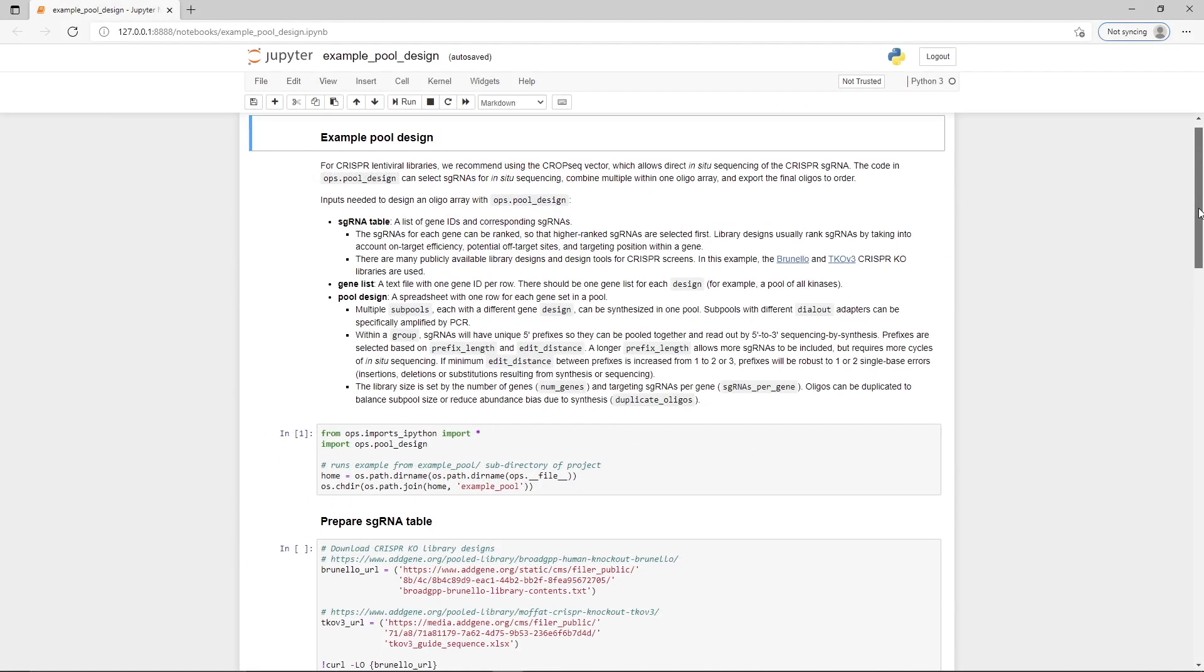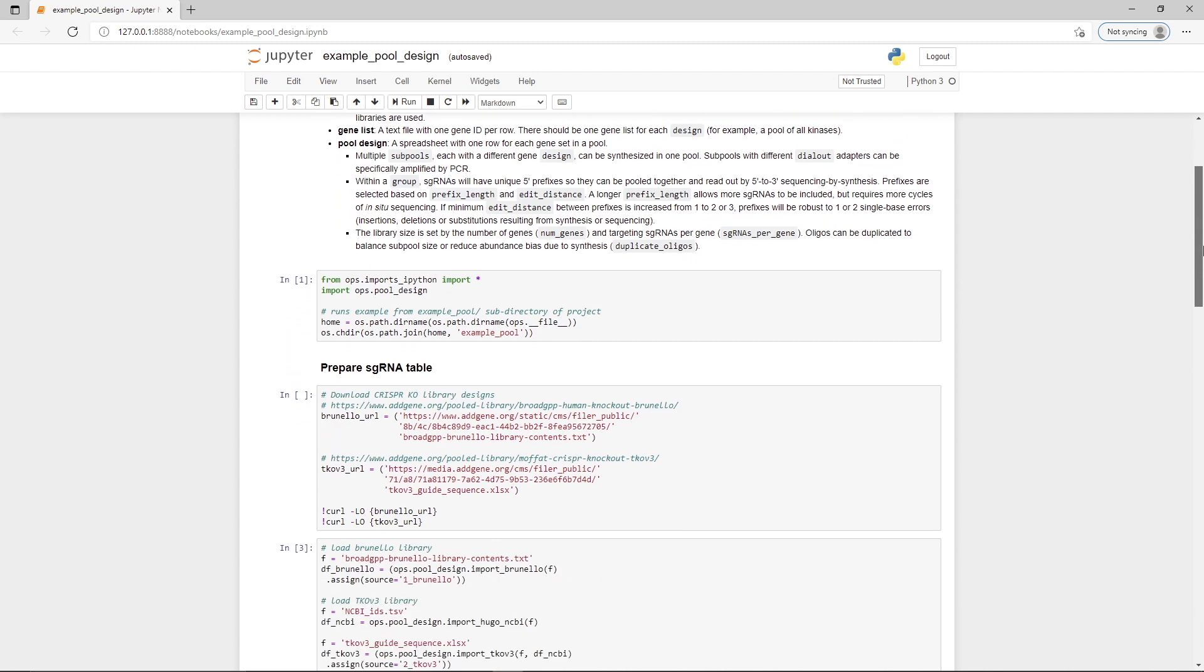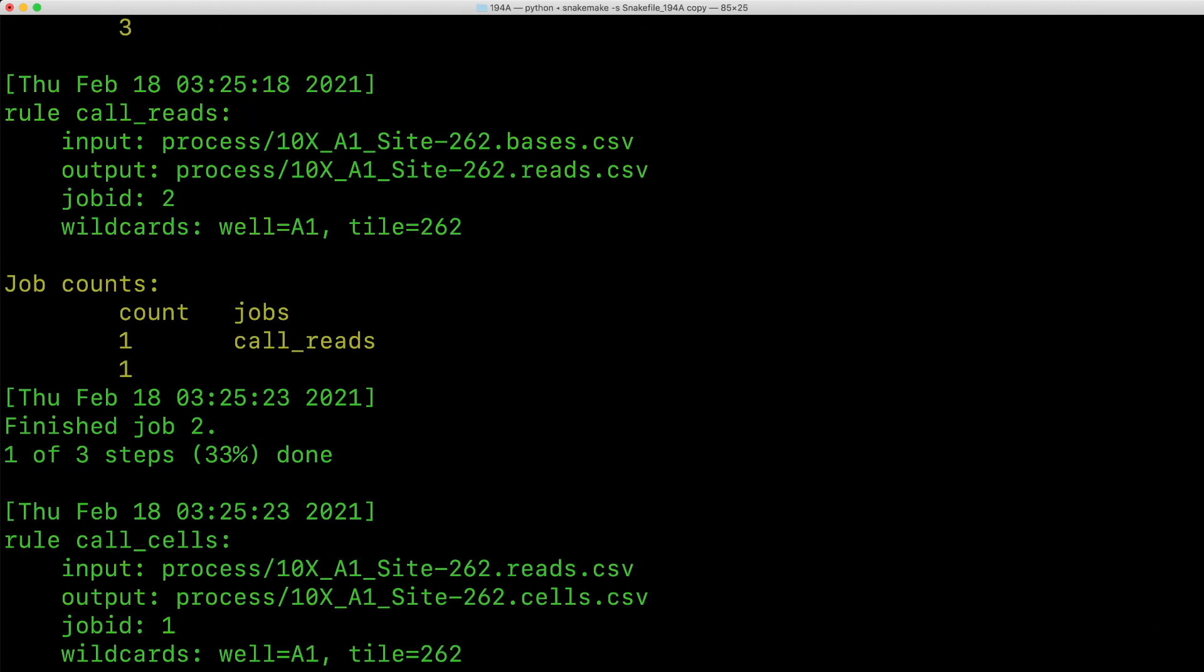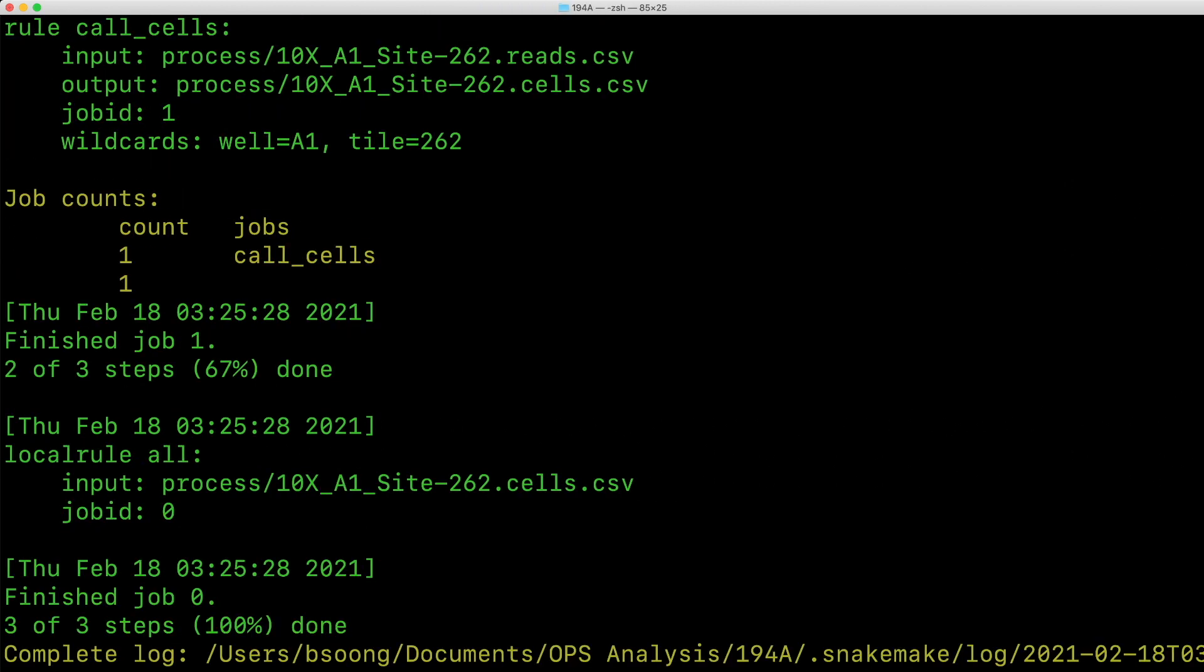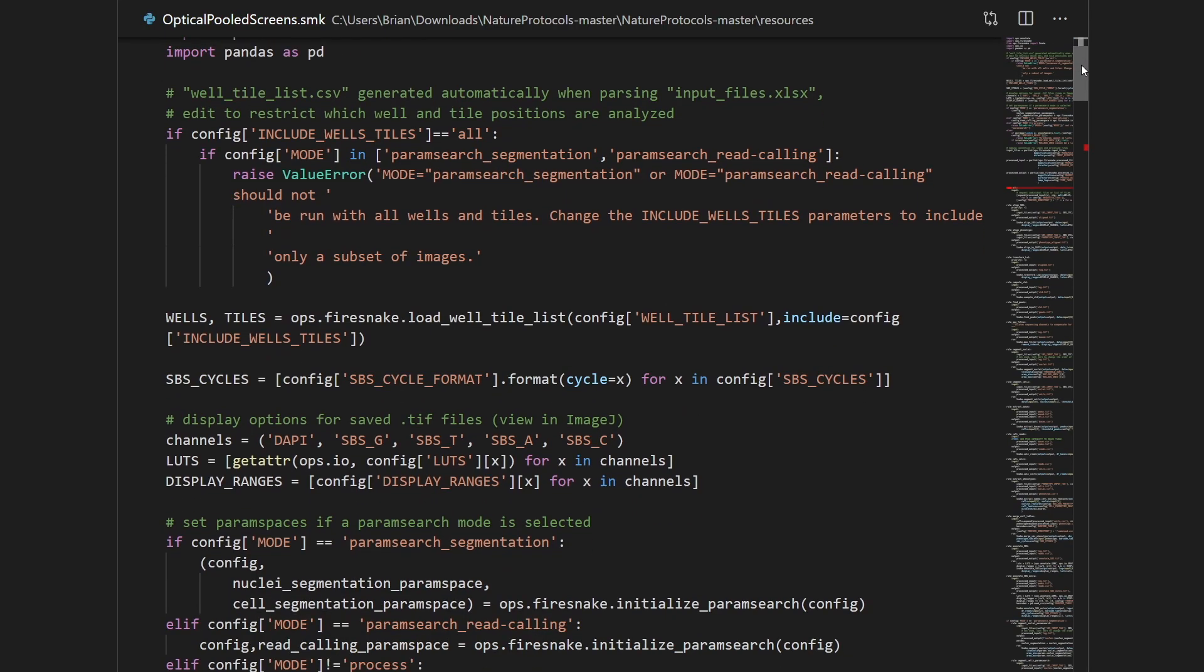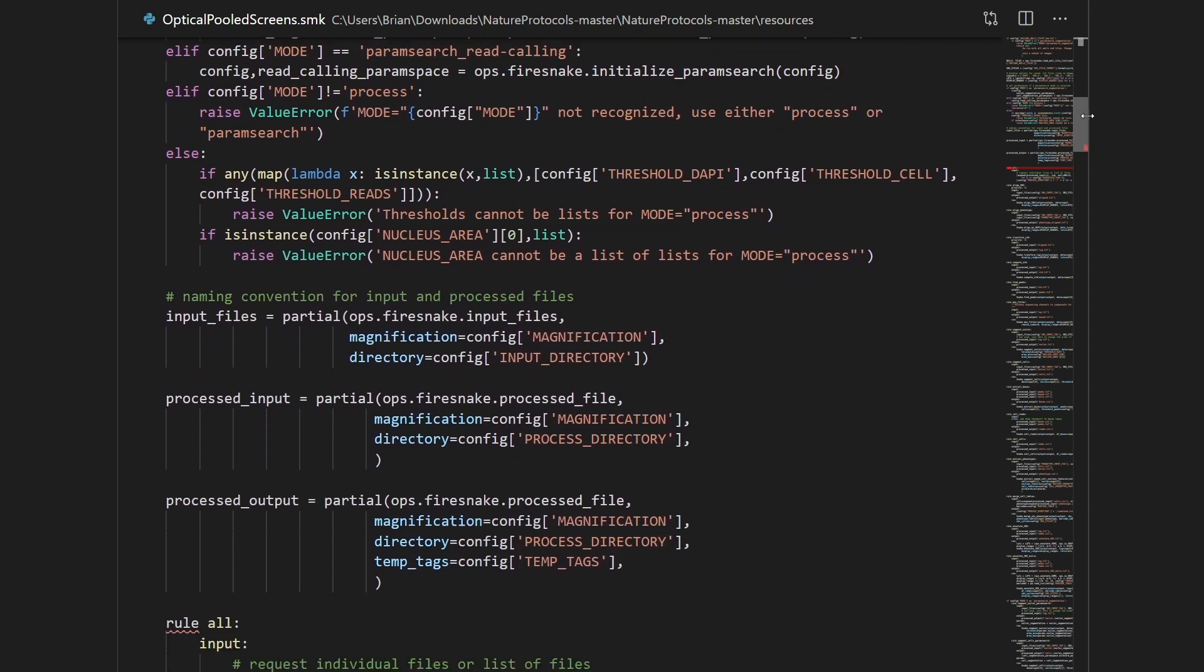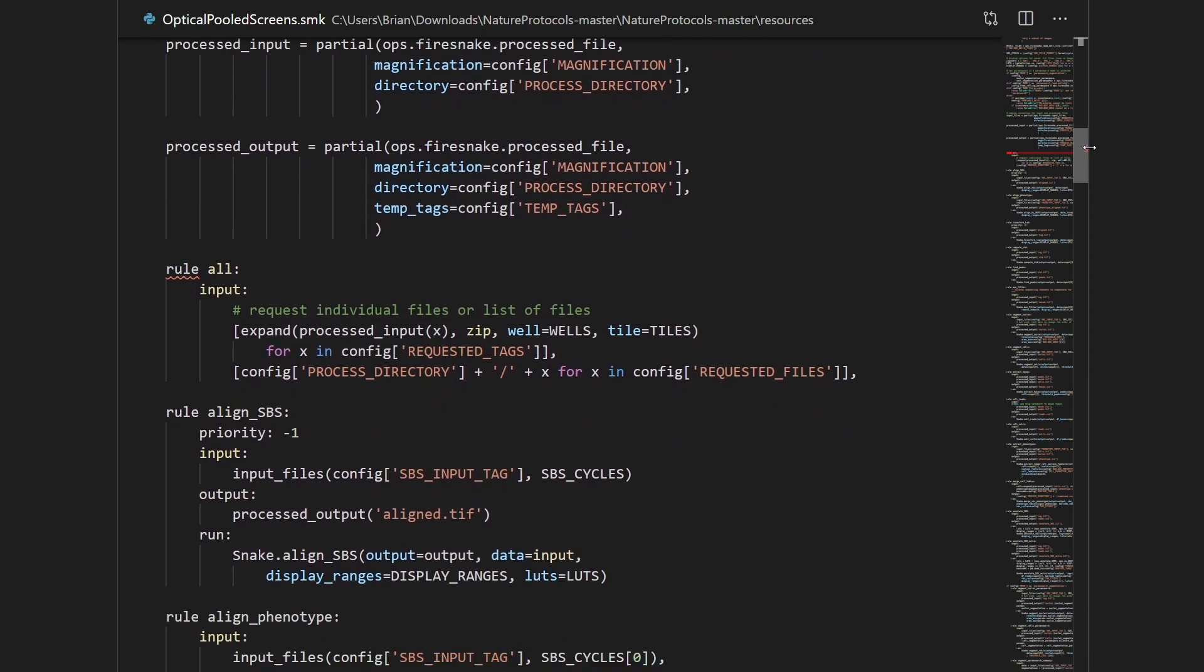An example Jupyter Notebook is provided to demonstrate the core functionality of the Python package. To scale this analysis for large datasets, it is recommended to process individual fields of view in parallel using the SnakeMake workflow management system. An example SnakeMake workflow is also supplied and can be flexibly deployed on a local computer, cloud-based virtual machine, or a compute cluster.